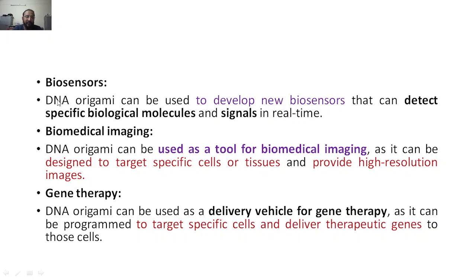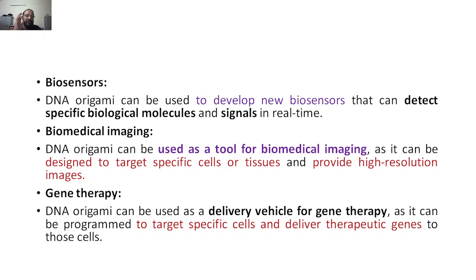Next, biosensors. DNA Origami can be used to develop new biosensors that can detect specific biological molecules and signals in real time. The DNA Origami can be attached to normal sensors to act as a biosensor. If you want to detect a particular antigen, particular enzyme, particular protein, particular nucleotide, or any kind of biomolecule, you can have this particular DNA Origami on your biosensor so that it can detect very easily since it has biological properties.